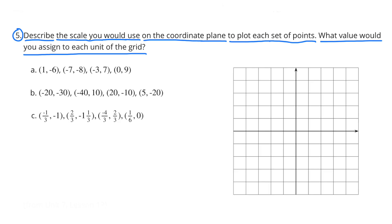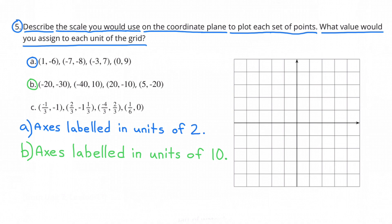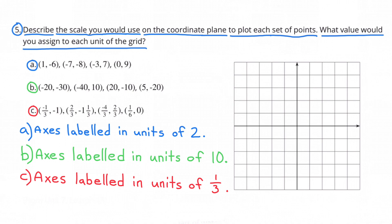Problem 5: Describe the scale you would use on the coordinate plane to plot each set of points. What value would you assign to each unit of the grid? A: axes labeled in units of 2. B: axes labeled in units of 10. C: axes labeled in units of 1 third.